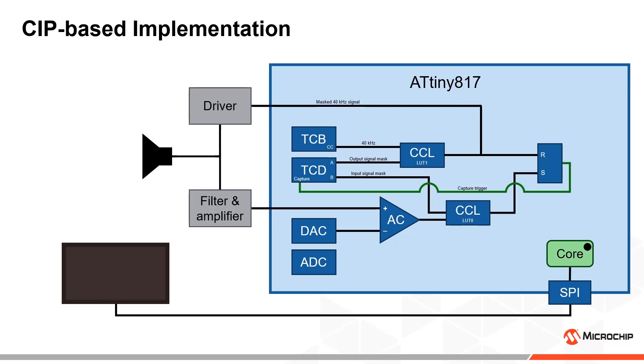The TCD generates a continuous 40 kHz signal, which is input directly to the first CCL block. The TCB generates a masking signal, which is input to both CCL blocks.